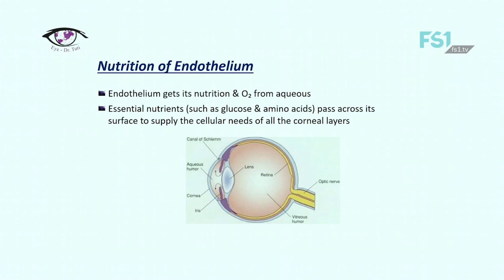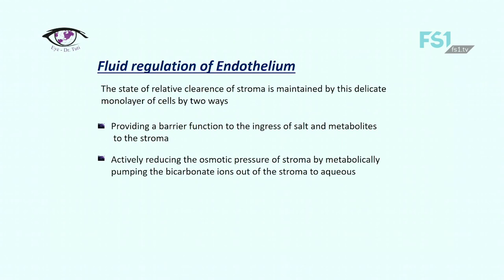A few words about nutrition of endothelium. Endothelium gets its nutrition and oxygen from aqueous humor, and essential nutrients pass across the surface of endothelial cells to supply the cellular needs of all the corneal layers. Regarding fluid regulation, the clearance of stroma is maintained by two main functions of endothelium: it provides a barrier function to the ingress of salt and metabolites into the stroma, and it actively reduces the osmotic pressure of stroma by metabolically pumping bicarbonate ions out of the stroma into the aqueous.